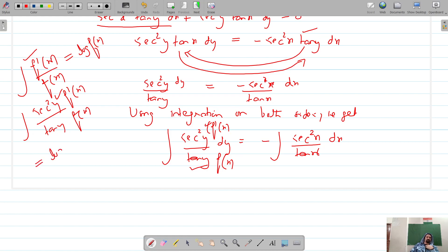This comes out to be log of tan y. We can write here log of tan y and this becomes negative of log of tan x. This becomes log of tan y plus log of tan x equals c.